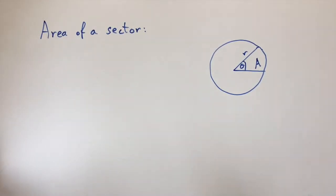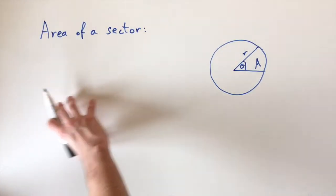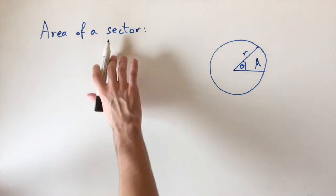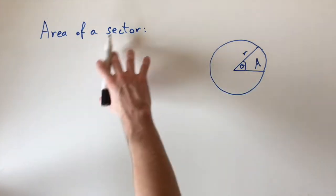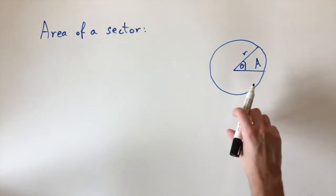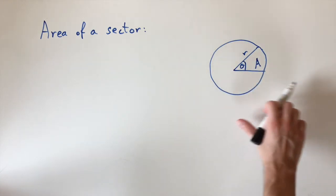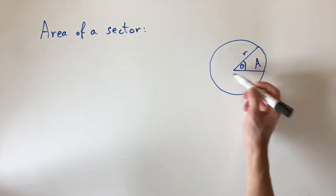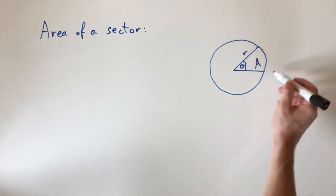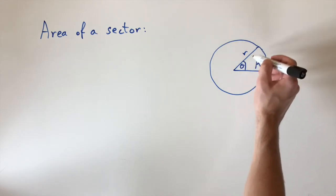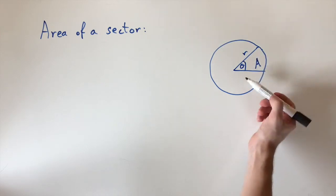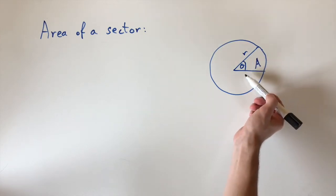Today we're going to be looking at finding the formula for the area of a sector, and then we're going to look at some examples using it. A sector relates to circles — it's just a slice of a circle, like a slice of cake. We cut two radii and want to find the area of the whole region between them.